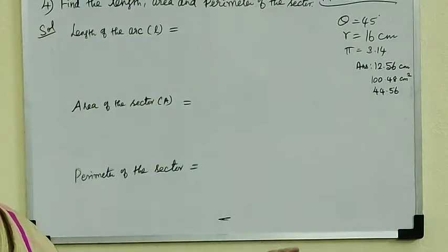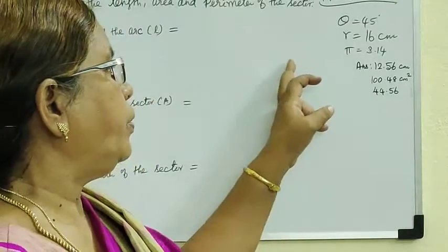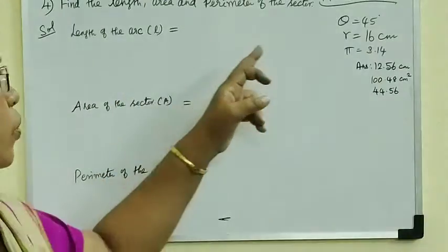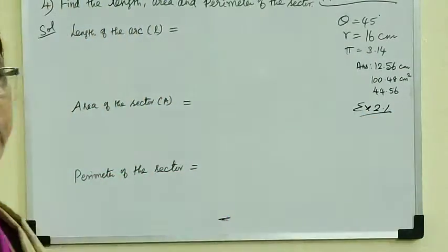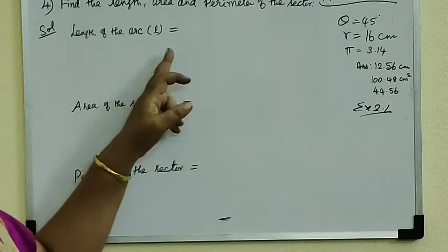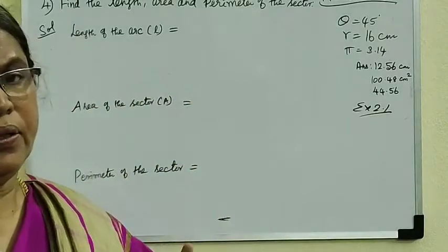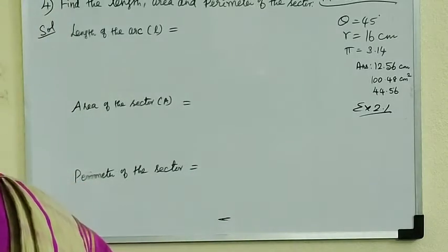Hello students, this is from Guamadi Maths channel, 8th Maths mensuration exercise 2.1. Question number 4: find the length, area and perimeter of the sector.